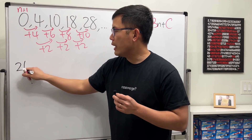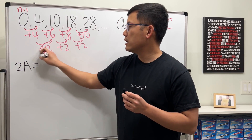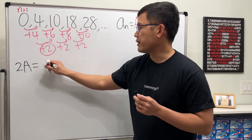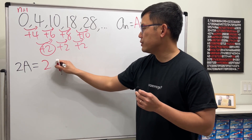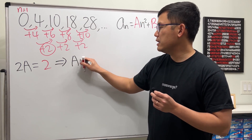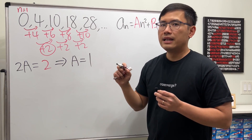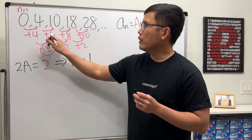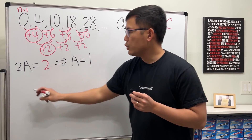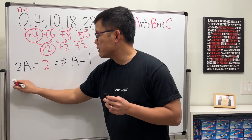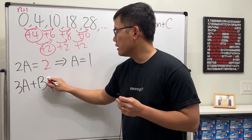We can find 'a' by using 2a equals the second difference, which is two. So two equals two means a equals one. Next, we utilize the first difference and remember that 3a plus b equals that number, which is four.